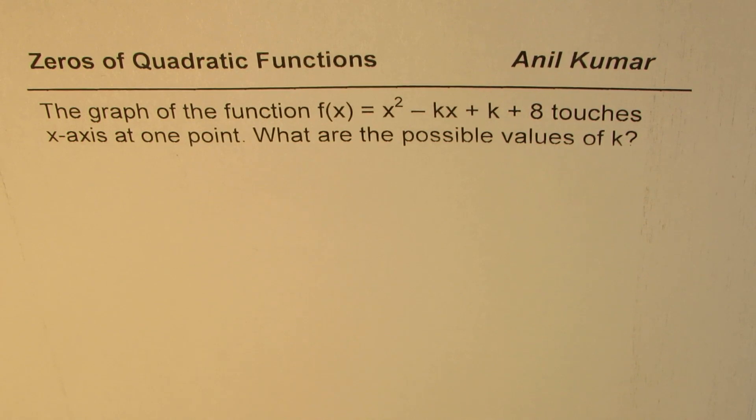The question is, the graph of the function f(x) equals x squared minus kx plus k plus 8 touches x-axis at one point. What are the possible values of k?